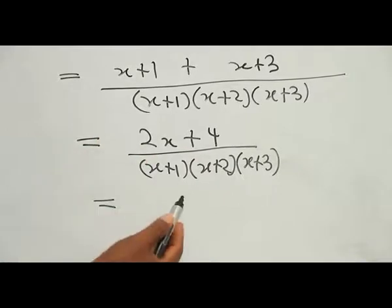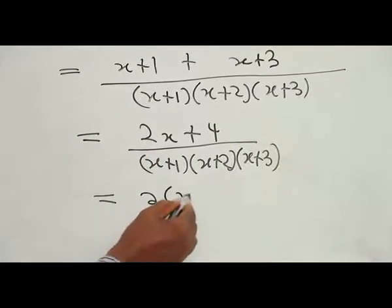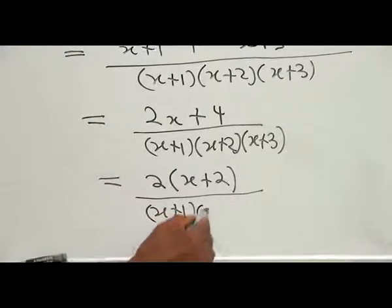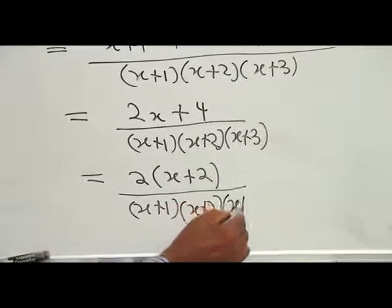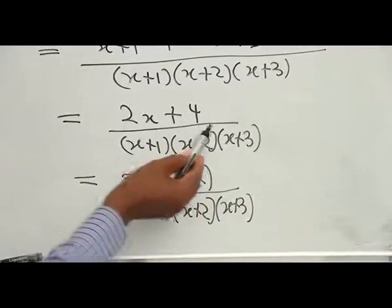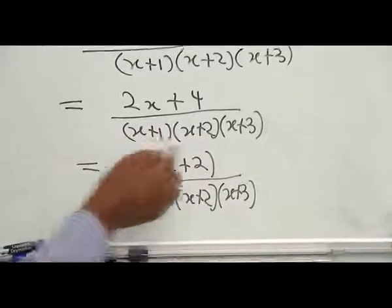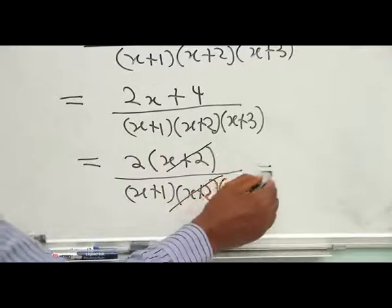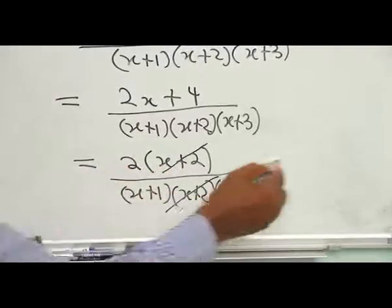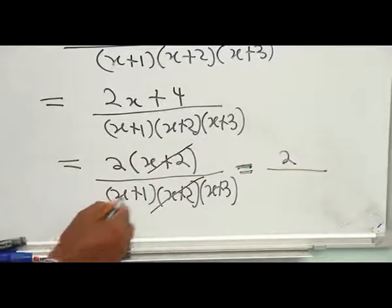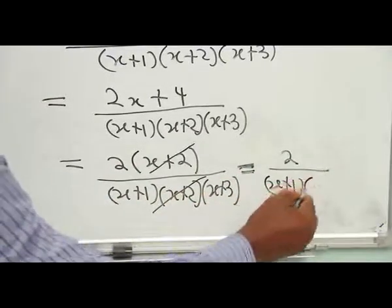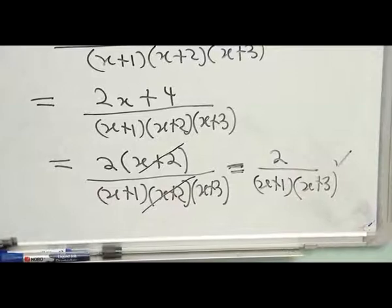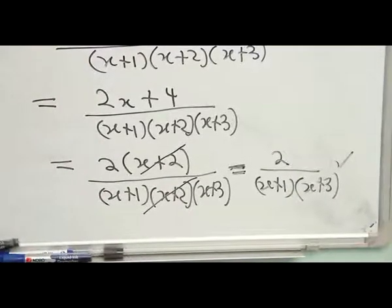So the numerator becomes (S plus 1) plus (S plus 3), which gives 2S plus 4, all over (S plus 1)(S plus 2)(S plus 3). Factorizing the numerator: 2S plus 4 equals 2(S plus 2). We now have 2(S plus 2) all over (S plus 1)(S plus 2)(S plus 3). The (S plus 2) terms cancel, giving the final result: 2 all over (S plus 1)(S plus 3).